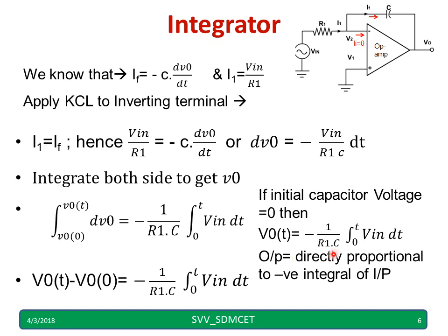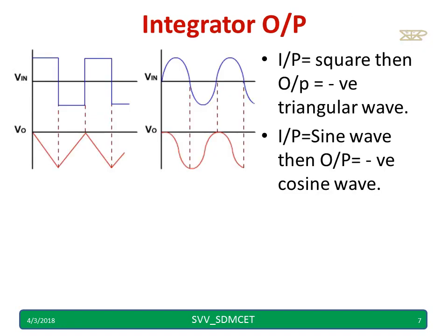Output is directly proportional to negative integral of input. This is the input-output waveforms. When the input is a square wave then output is a negative triangular wave. When the input is a sine wave then the output is negative cosine wave.